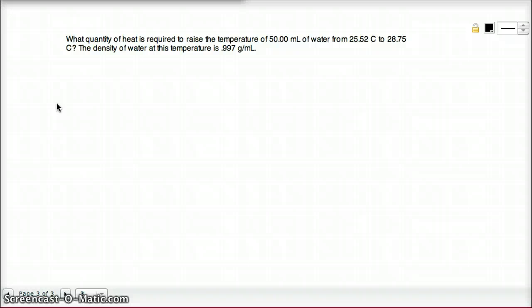What quantity of heat is required to raise the temperature of 50 milliliters of water from 25.52 degree Celsius to 28.75 degree Celsius? The density of water at this temperature is 0.997 grams per milliliter.